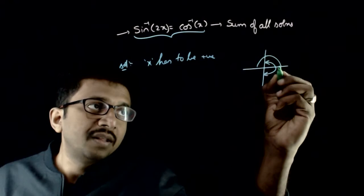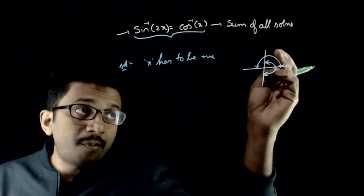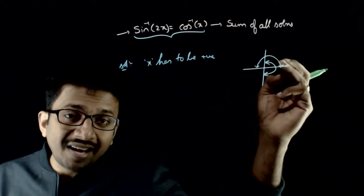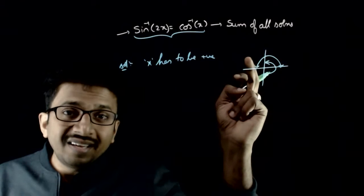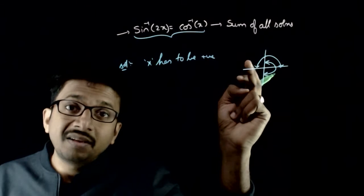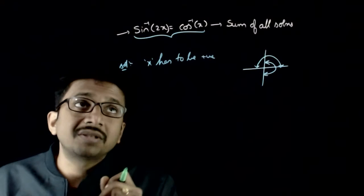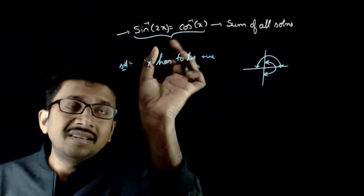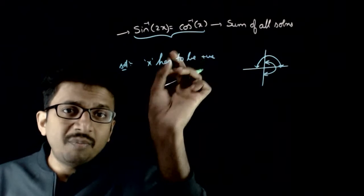Similarly, with respect to cos inverse: if a positive number goes inside cos inverse, you get an angle in the first quadrant; if a negative number goes inside cos inverse, you get an angle in the second quadrant. So there is no intersection for negative numbers, meaning for this equation to be valid, x has to be positive.